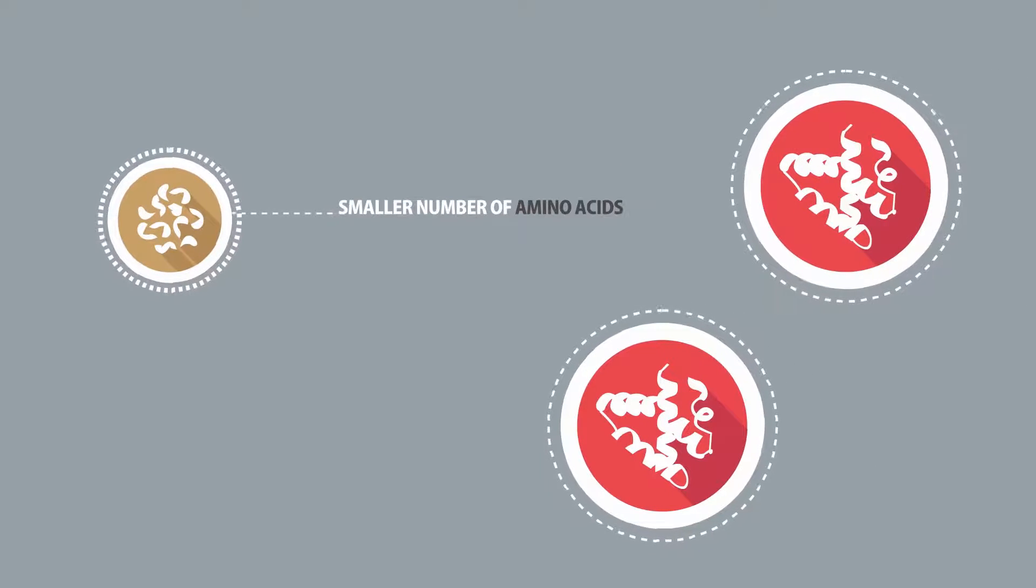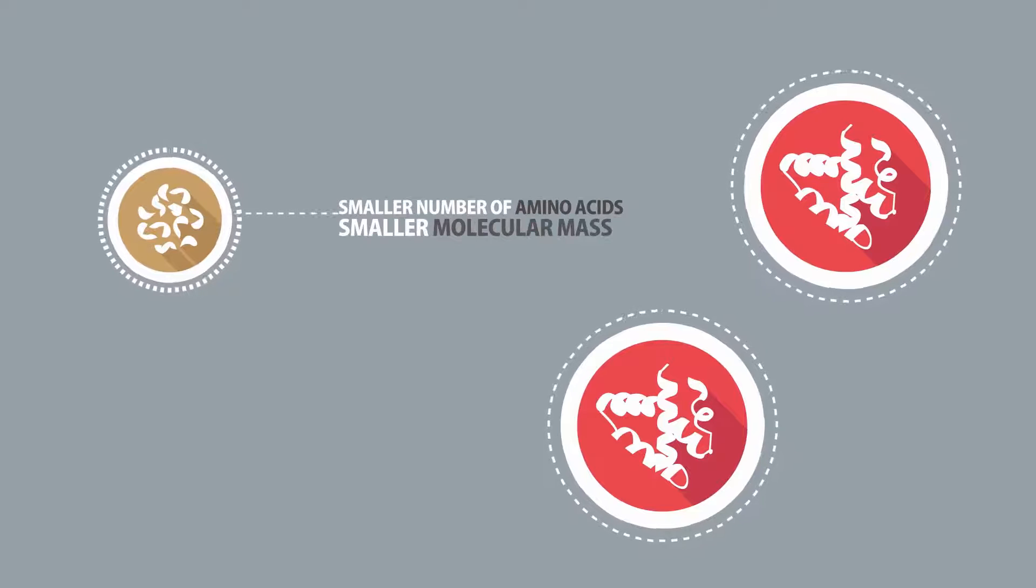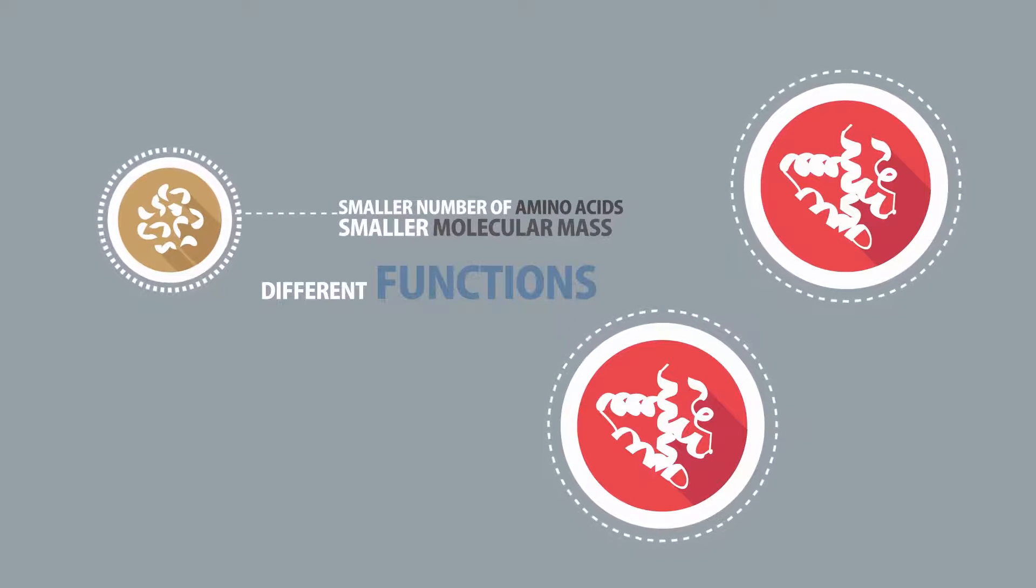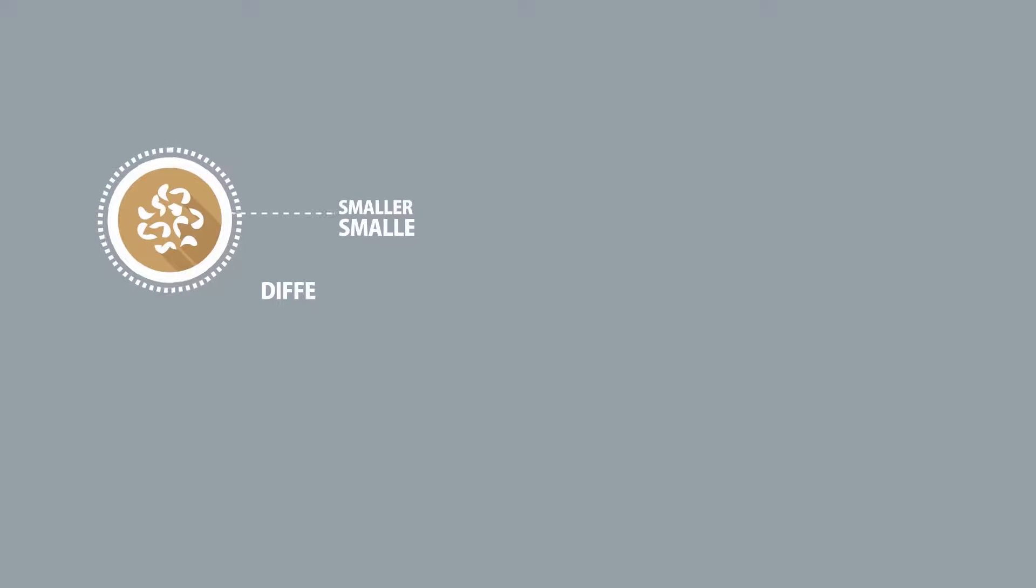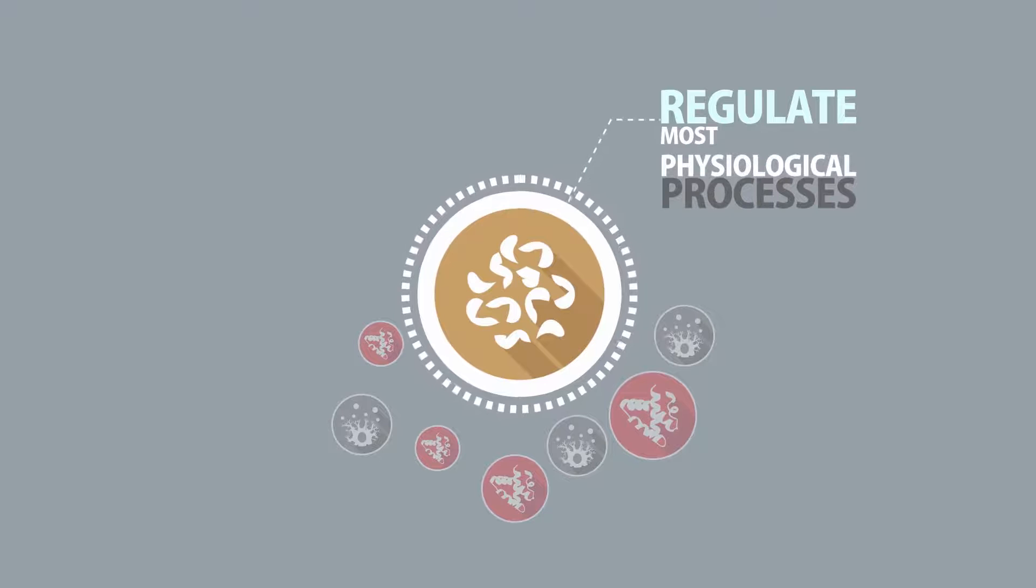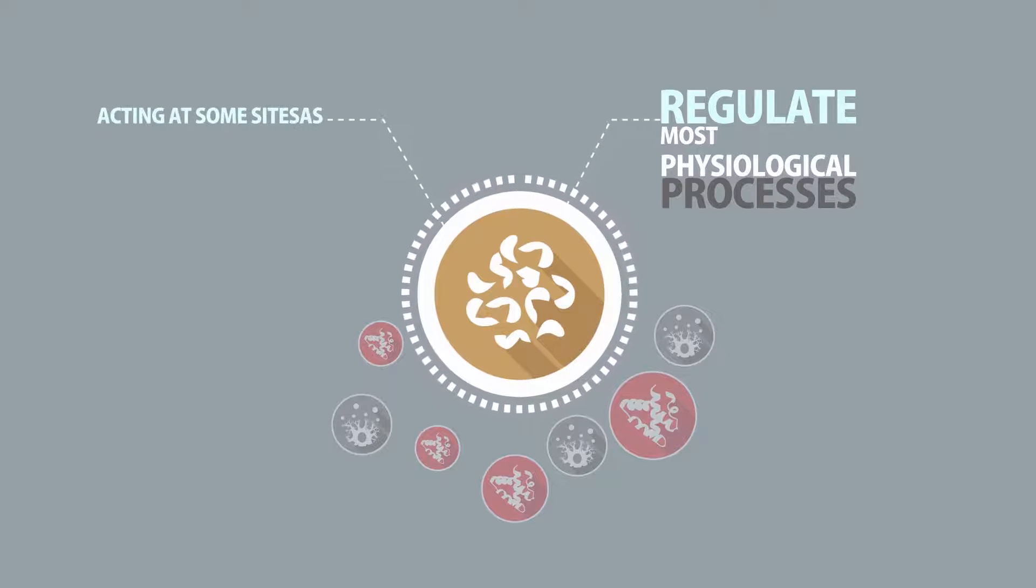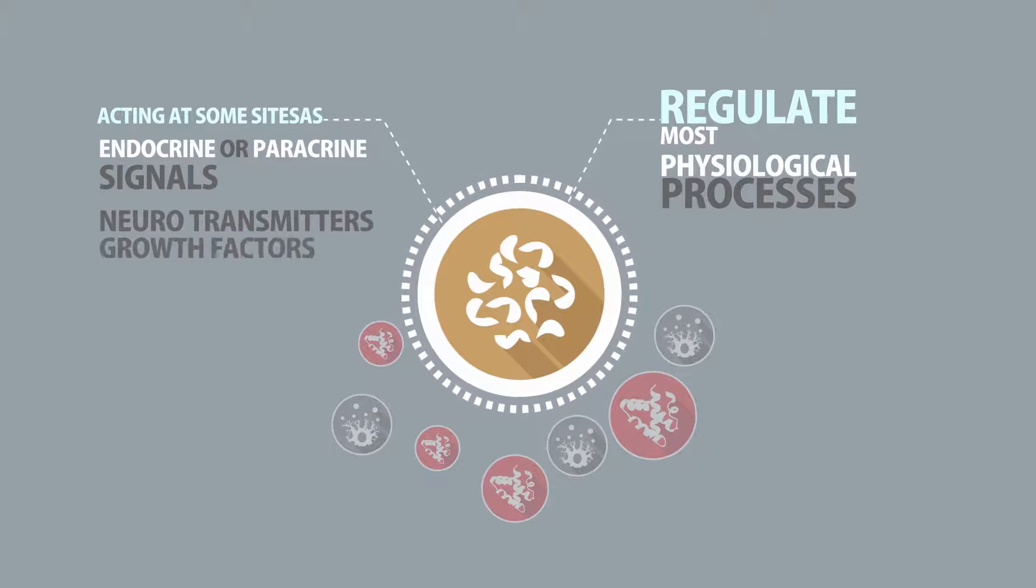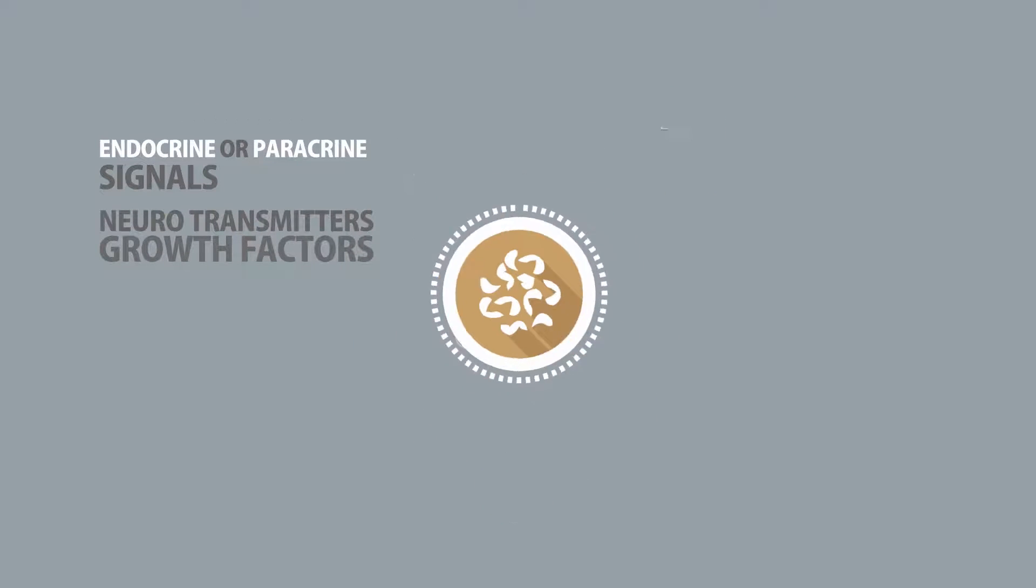How do peptides and proteins differ? Peptides have a smaller number of amino acids and smaller molecular mass along with different functions in relation to other proteins of a larger size. Peptides regulate most physiological processes, acting at some sites as endocrine or paracrine signals and at others as neurotransmitters or growth factors. They are already being used therapeutically in diverse medical areas such as neurology, endocrinology, and hematology.